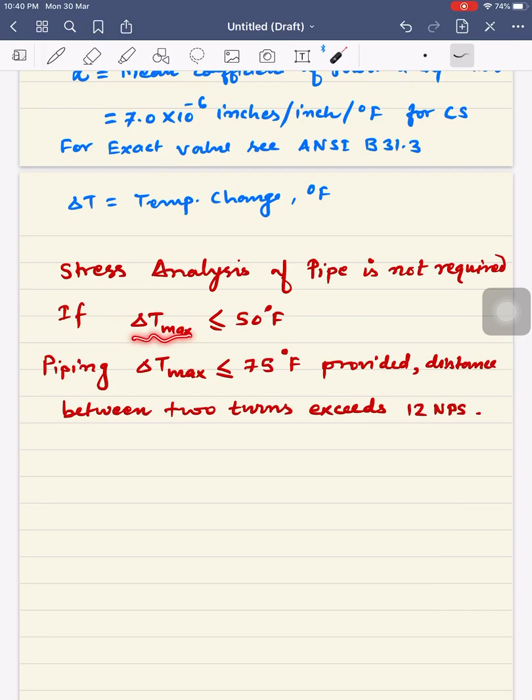There are some other rules: stress analysis of pipe is not required if delta T maximum is less than or equal to 50 degrees Fahrenheit, or if delta T maximum is less than or equal to 75 degrees Fahrenheit provided that the distance between two turns exceeds 12 normal pipe sizes.